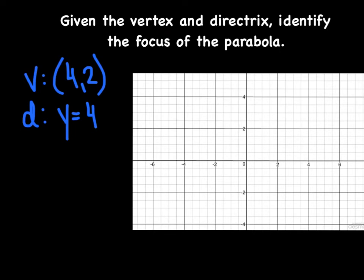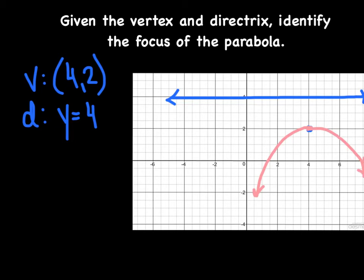This time we're given the vertex and the directrix, and the focus is missing. The directrix must always be on the exterior, so the parabola opens away from it. The vertex is at (4, 2) and the directrix is at y = 4, which means the parabola opens downward. The distance from the vertex to the directrix is 2 units, so dropping another 2 units puts the focus at (4, 0).